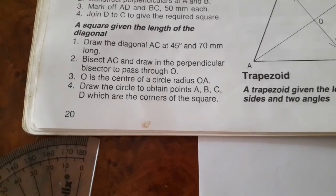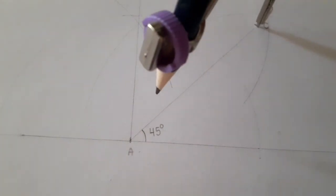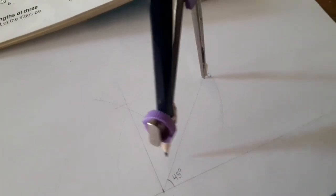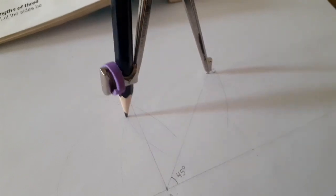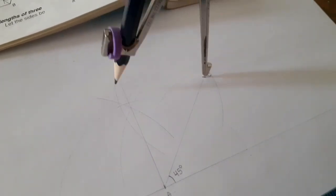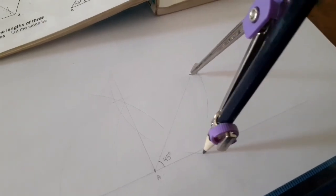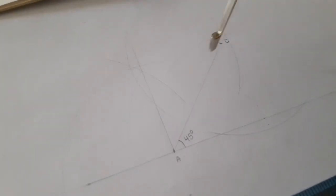So now that we have the point C, 7 centimeters, step number two is to bisect AC and to draw the perpendicular bisector through O. So we bisect AC, dividing a line into two equal parts with our compass. We place our compass at point C, open it to more than half of A, and you draw arcs above and below the line AC.